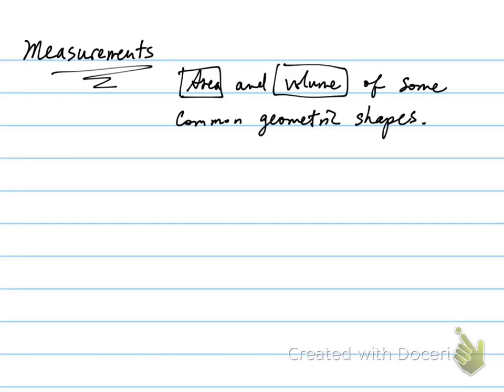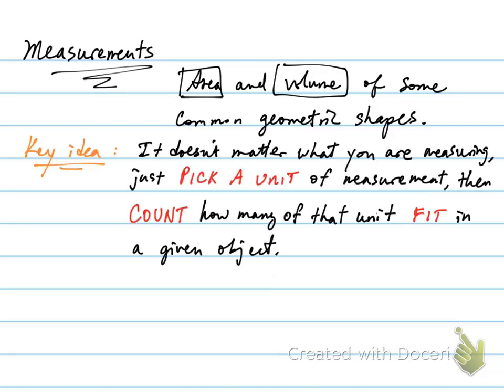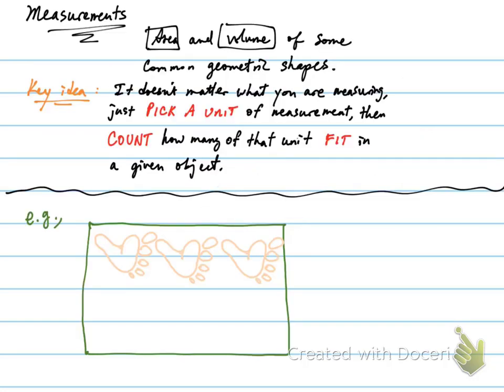The fundamental concept in measurements is that it doesn't matter what you're measuring — just pick a unit of measurement and count how many of that unit fit into the given object. For example, in the old days when people didn't have rulers, people measured the size of a room using simply their feet. But the problem is your friend's size of foot is different than your size of foot, making it difficult to communicate this type of information formally.